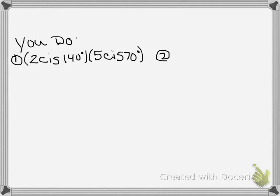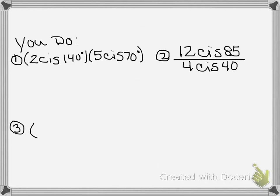So we knocked out two examples. I'm going to give you three that you should try. Let's do three you do's. 1. I want you to multiply 2 cis 140 degrees times 5 cis 70 degrees. 2. I want you to divide 12 cis 85 degrees by 4 cis 40 degrees. And last but not least, number 3, I want you to take 3 cis 15 degrees and square it. Pause the video, try these three problems, come back, and check your answers. See you in a bit.